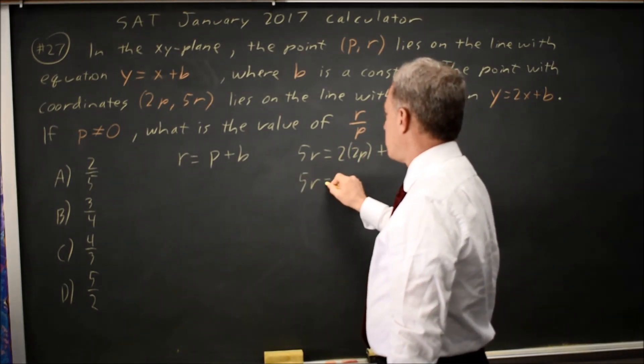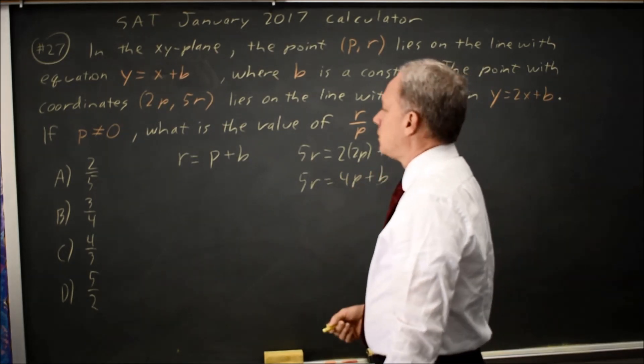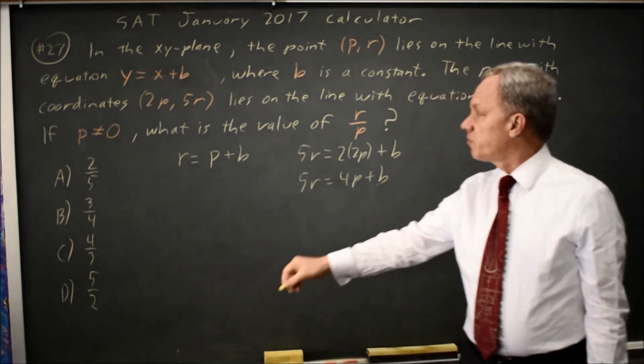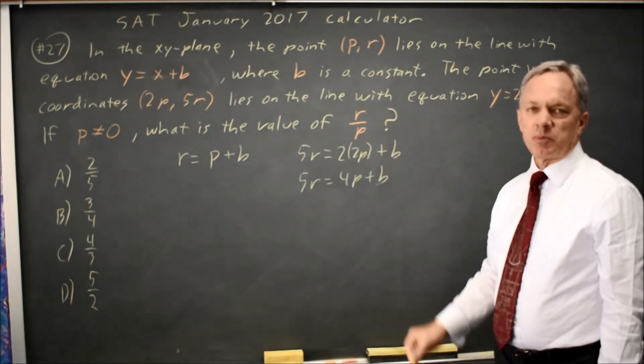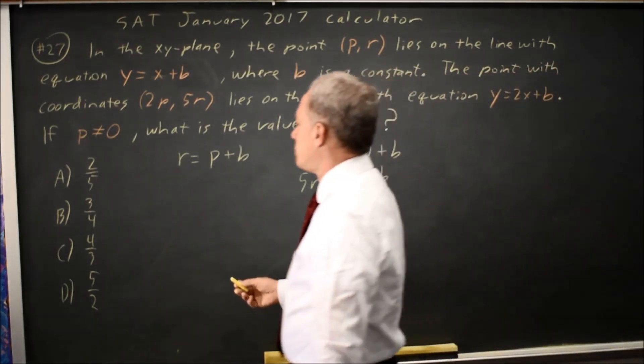None of our answer choices have b in them when we're looking for r over p, so I'm going to eliminate b from these equations.